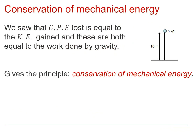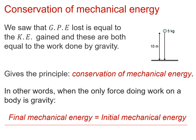We've already seen that the gravitational energy lost when an object falls through a height is equal to the kinetic energy gained in that process, and these are both equal to the work done on the object by gravity. We can call this the principle of conservation of mechanical energy — the mechanical energy at the end of a process will equal the mechanical energy at the start. But that's only when the only force doing any work is gravity.